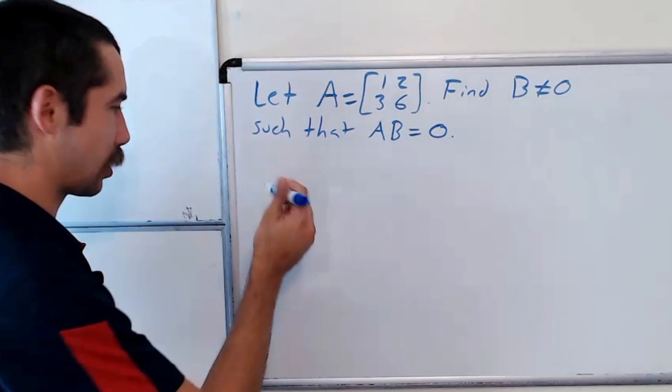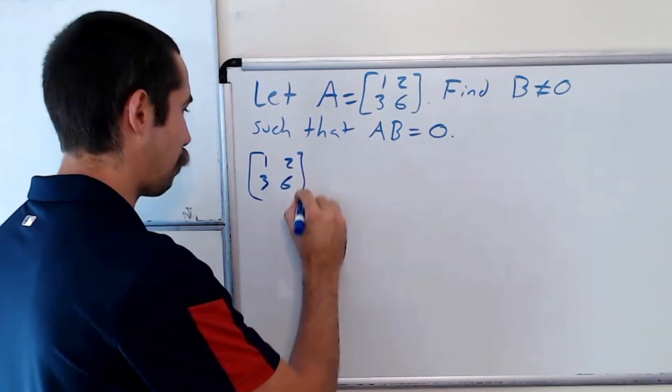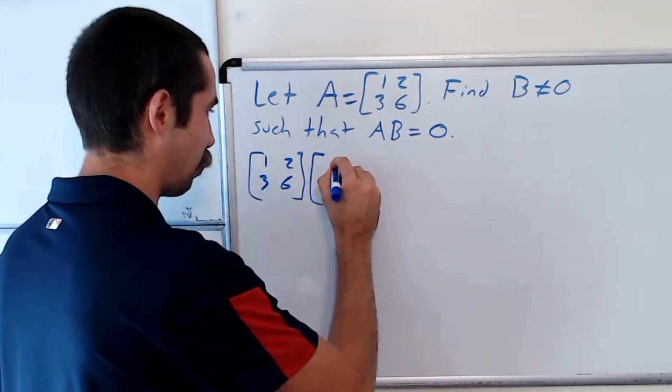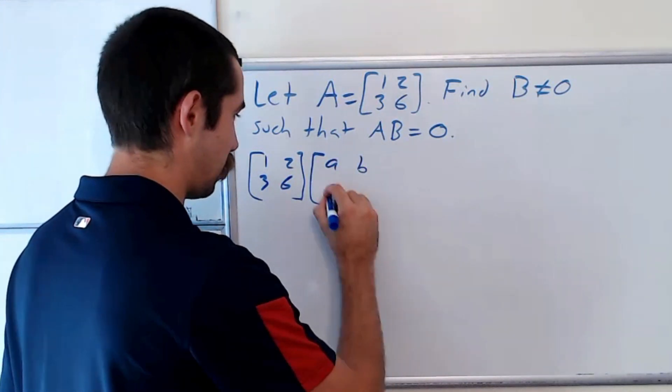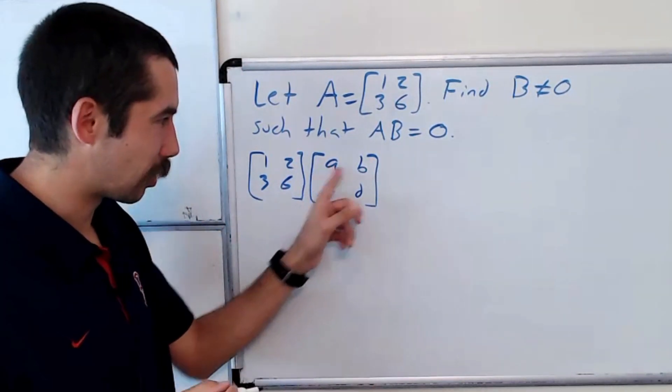Okay, so let's just work this through. We have A, which is [1, 2; 3, 6]. And we'll let B be the matrix that has a, b, c, d as its entries. Right, and we want to find the values for all these lowercase letters.